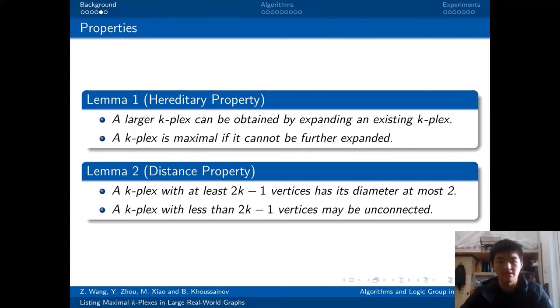The second property is the distance property. That is, a k-plex with at least 2k-1 vertices has its diameter at most 2. However, a k-plex with less than 2k-1 vertices may be unconnected. It tells us the number 2k-1 is an important boundary of the connectedness and the diameter.